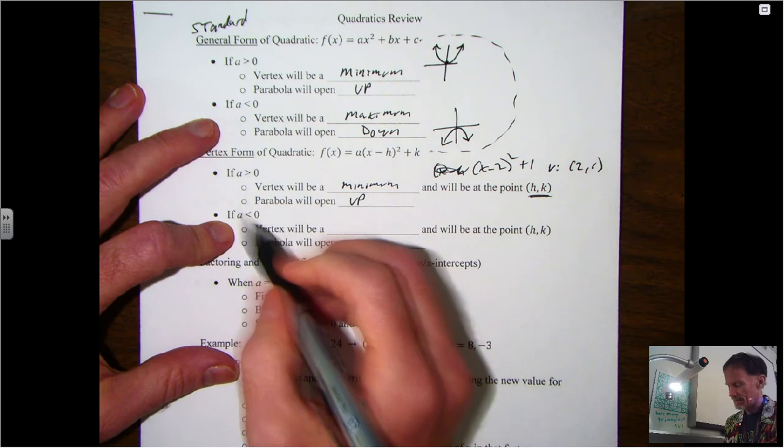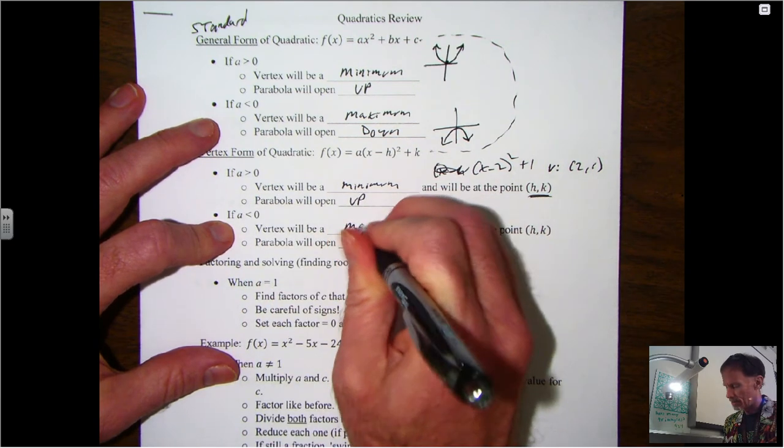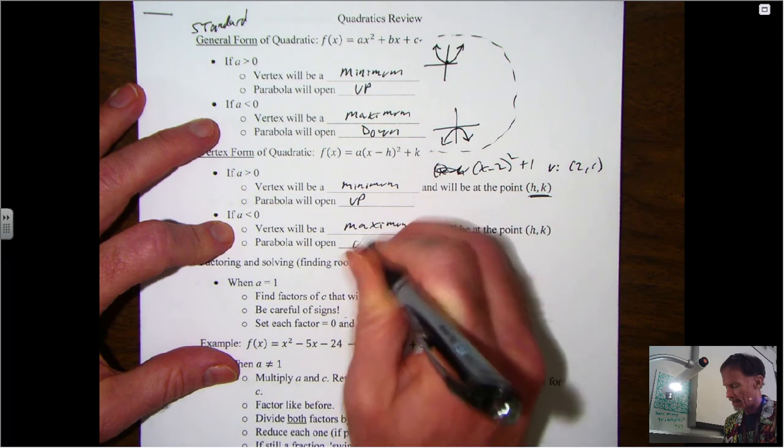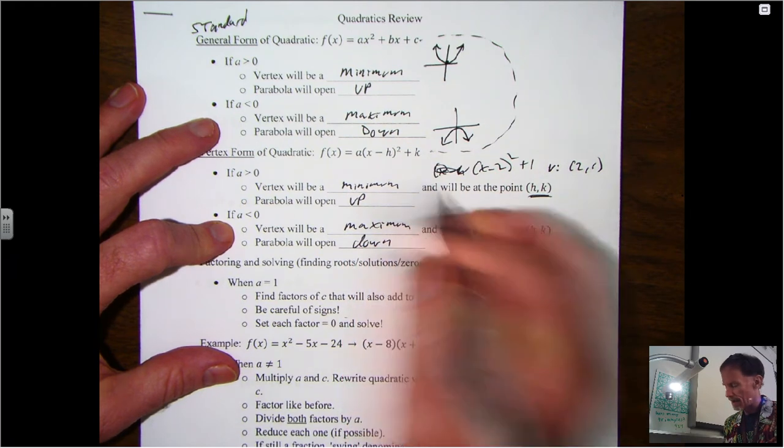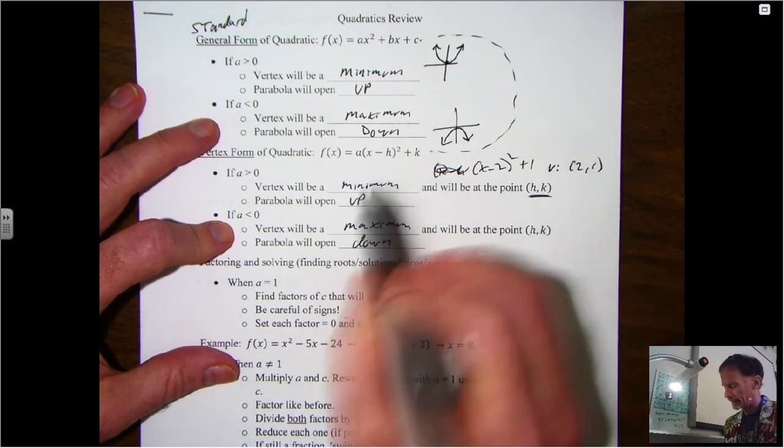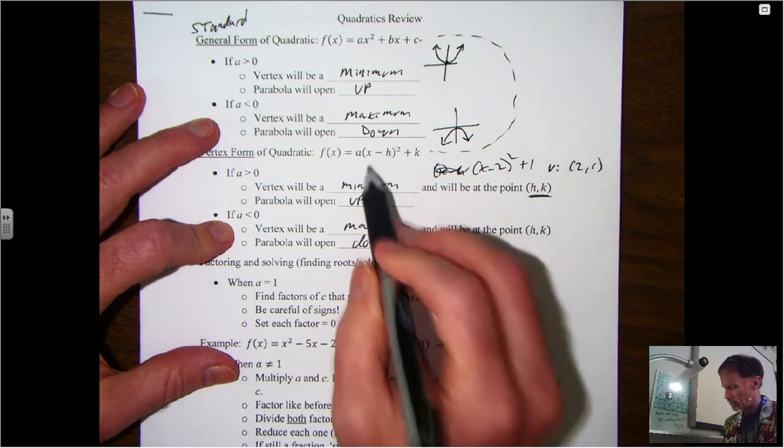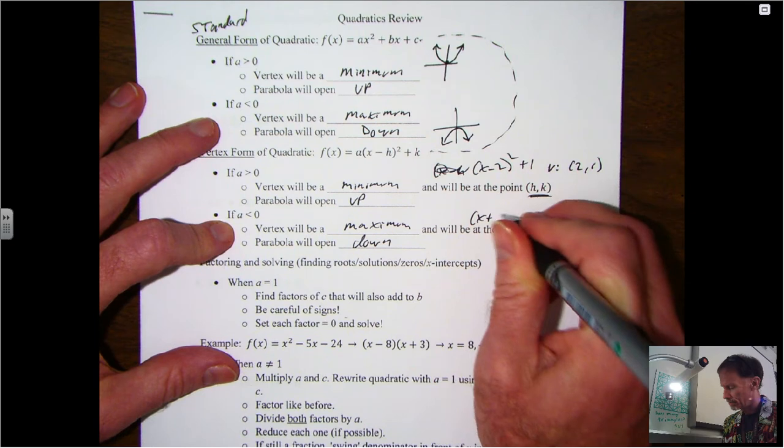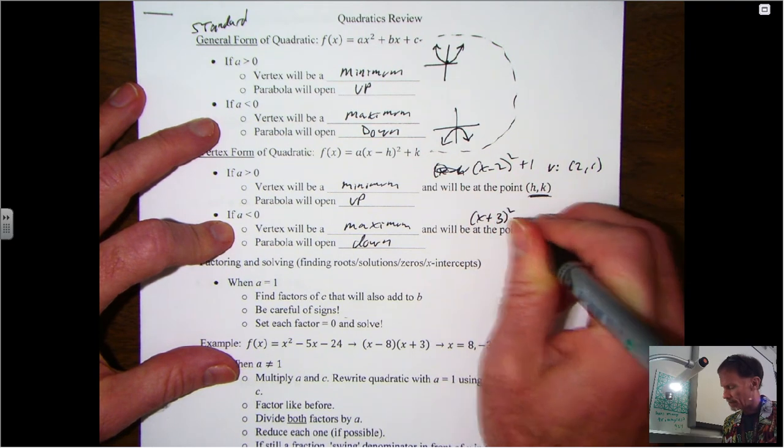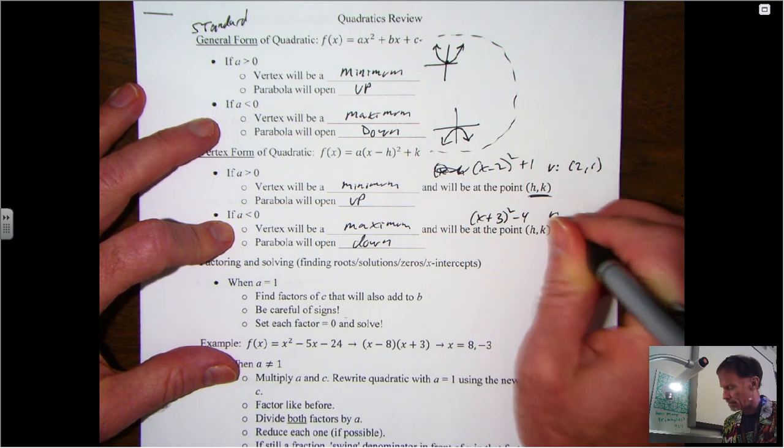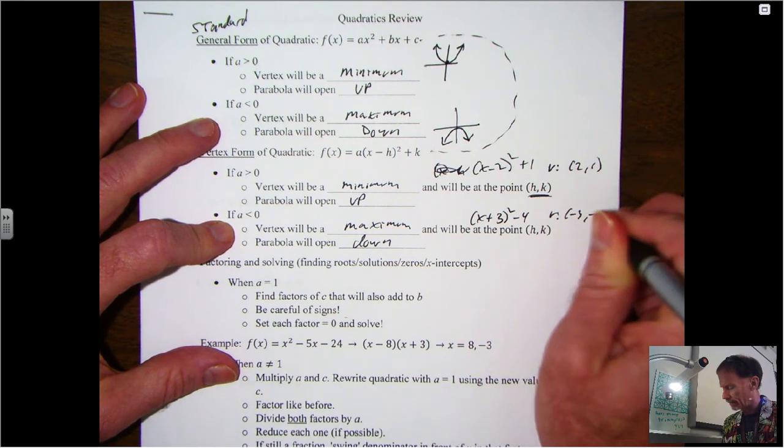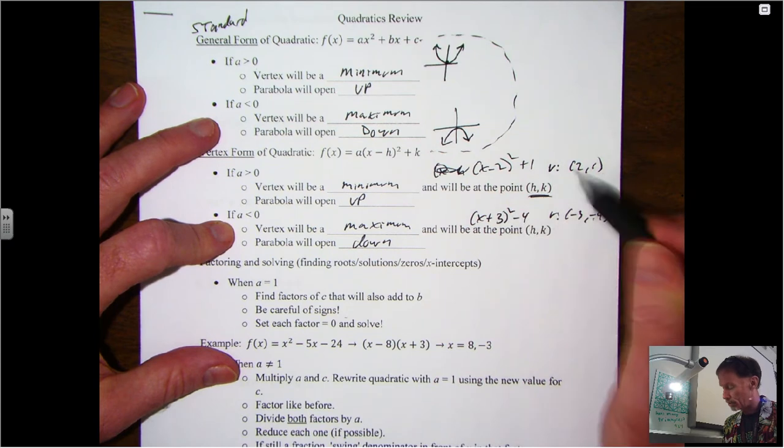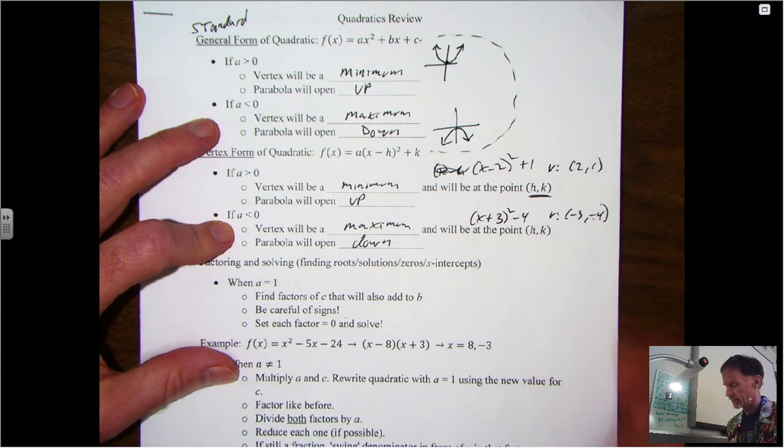In other words, if you saw something like x minus 2 squared plus 1, then that means your vertex would be at (2,1). Same thing, if your a is less than zero, it's still going to be a maximum and the parabola is going to open down. Same a value controls everything. But again, notice your (h,k) is still in the same spot. So if this was like x plus 3 squared minus 4, now your vertex is going to be at (-3,-4). The k value stays the same, the h value switches.